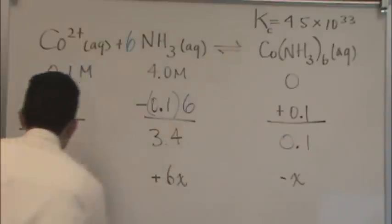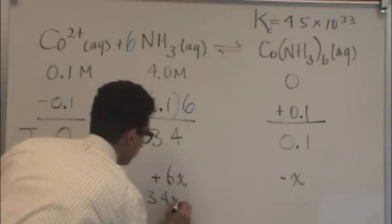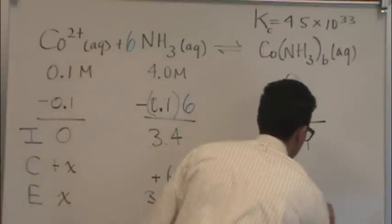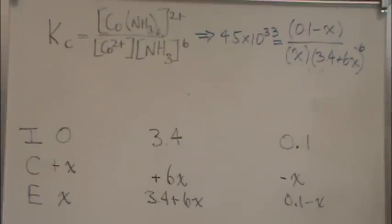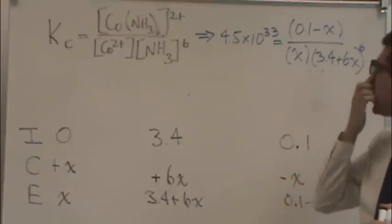And so the E line is merely the sum of the I and the C lines. So you get something that looks like that. Now, let me write the equilibrium expression so you can see what it would look like. All right, here's the equilibrium expression. I hope you still have the reaction down on a piece of paper because I had to erase it to do this part.